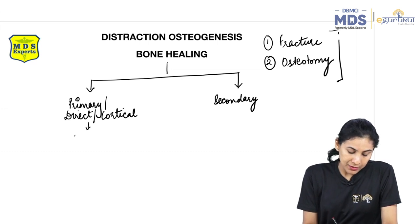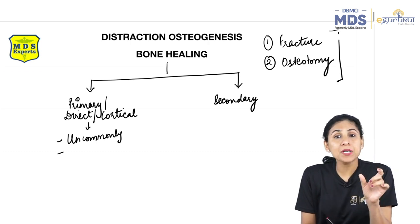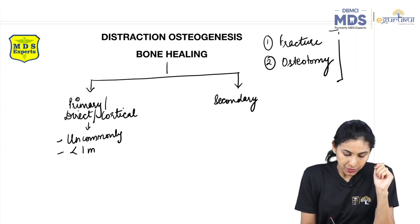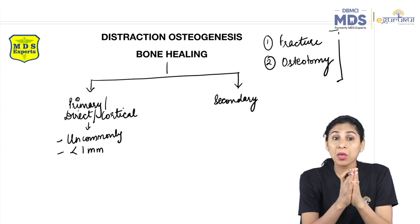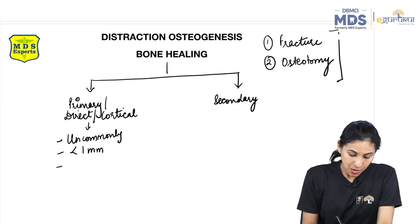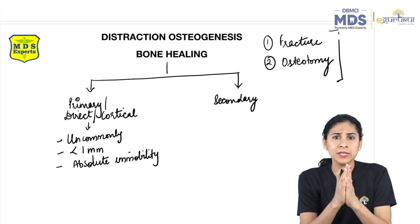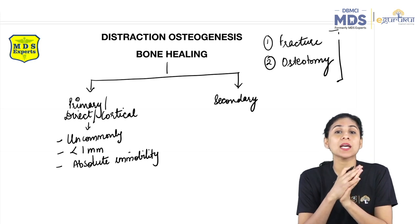Primary bone healing is uncommon. It happens when the gap between the fracture fragments is less than 1 mm, and when there is absolute immobility between the fracture fragments. Only then can you have the primary or cortical type of bone healing.